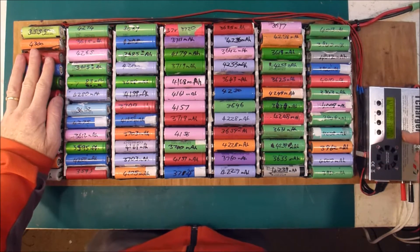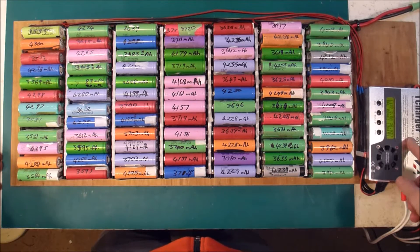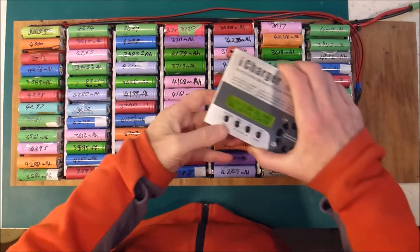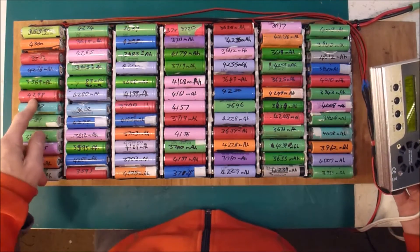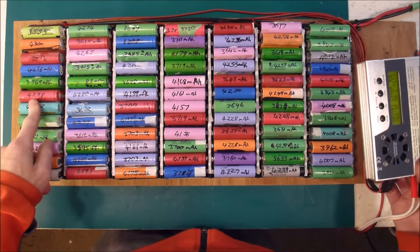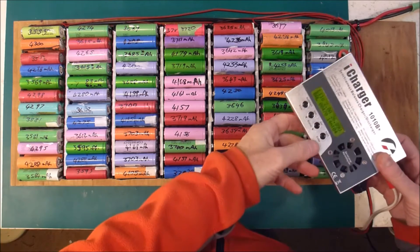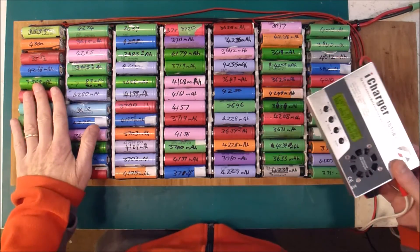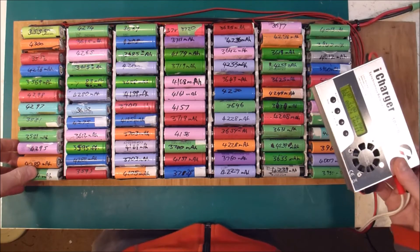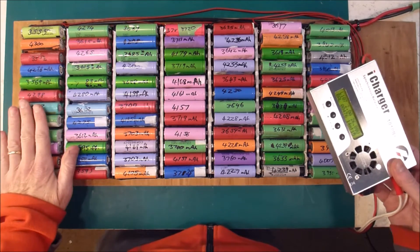I'm currently balance charging it on the iCharger and it's all looking pretty good. Currently I've put in about 14 amp hours into it over the last 7 hours. I'm just charging it at 2 amps into 24 cells in parallel. So really, really low current.